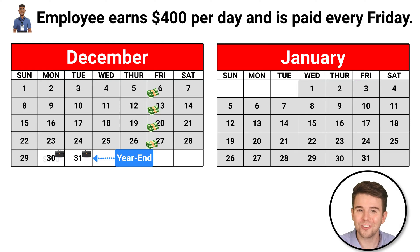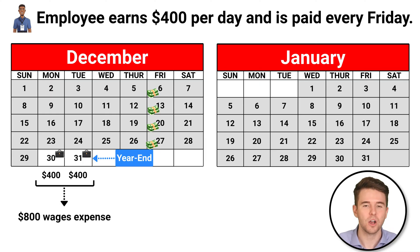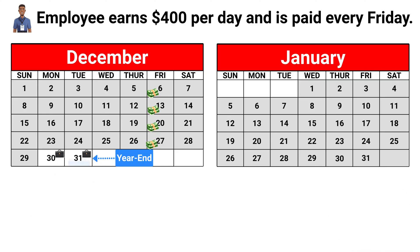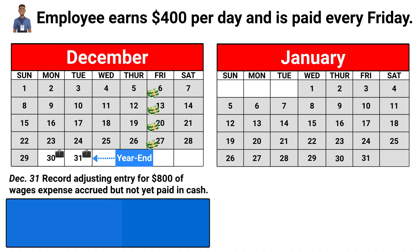Because the employee has earned those wages but has not yet been paid by December 31st, we must record an adjusting entry for $800 of wages expense, computed as $400 per day multiplied by two days. The adjusting entry on December 31st would include a debit to wages expense for $800 and a credit to wages payable for $800.